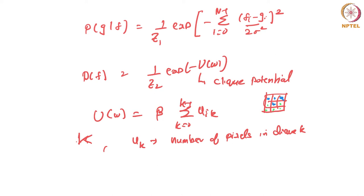This is in terms of probability. Solving this problem is kind of hard because there are many arrangements of pixel values. One way you would solve this problem is to formulate P(F|G), which is what we saw.